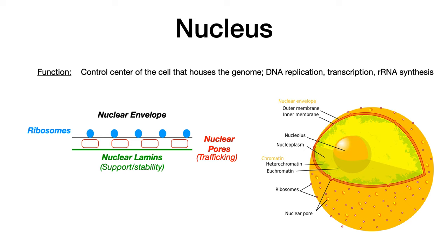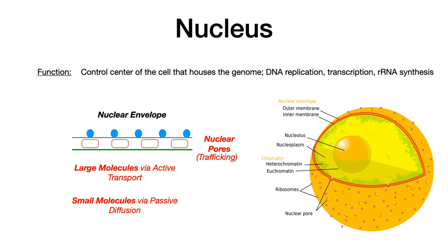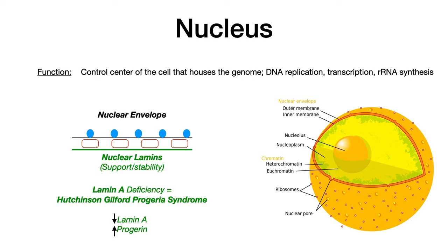The nuclear lamin is very important for your exam. If you have a lamin deficiency — specifically a lamin A deficiency — you can get different disease processes. A lamin A deficiency is responsible for Hutchinson-Gilford progeria syndrome. A decrease or deficiency in lamin A causes an increase in something called progerin. Hutchinson-Gilford progeria syndrome is the result of a problem or a deficiency in nuclear lamin, specifically lamin A.